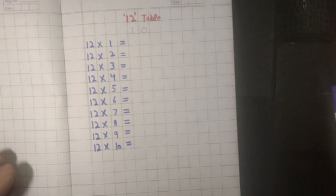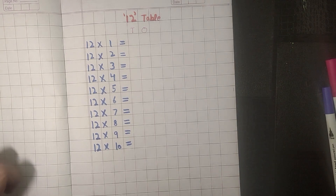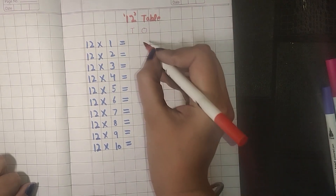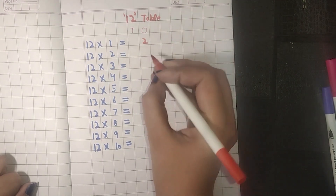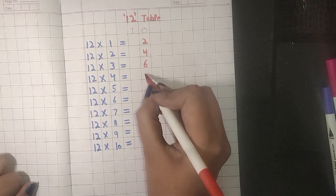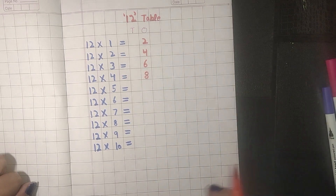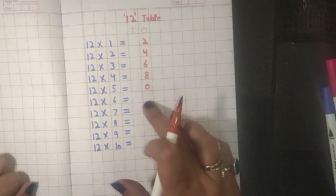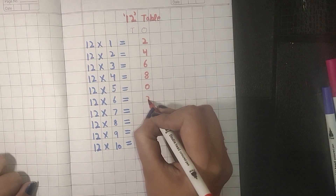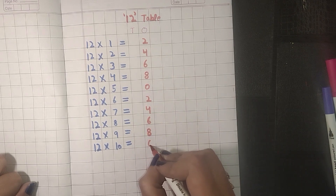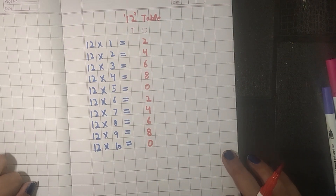For the 12 times table, we will write the table of 2 up to 2 times 4 on the ones digit. That is: 2 times 1 is 2, 2 times 2 is 4, 2 times 3 is 6, 2 times 4 is 8. Then we place a 0, and repeat these digits again. This gives us all the digits for the ones place.